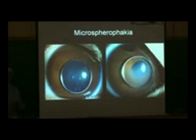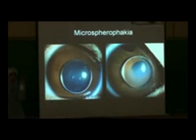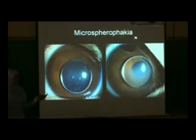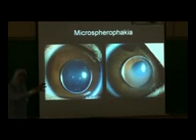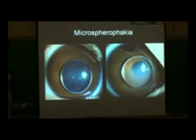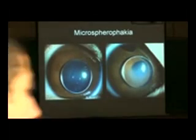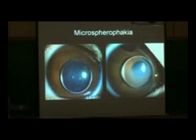Congenital cataract can be associated with an anomaly in the shape and size of the lens. The lens, instead of having a wide convex structure, becomes small and spherical — small is micro, spherical is sphero. This is called microspherophakia. When this small spherical lens is present posterior to the iris, it may displace posteriorly into the vitreous or become displaced into the anterior chamber. It passes through the pupil and drops into the anterior chamber, pressing on the back surface of the cornea and causing corneal decompensation. So congenital cataract can be associated with microspherophakia.